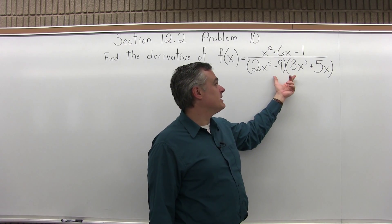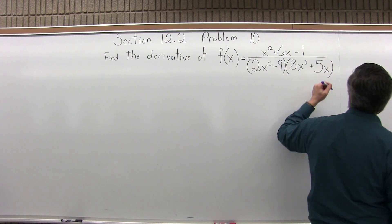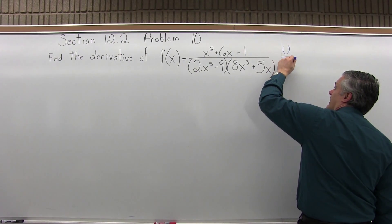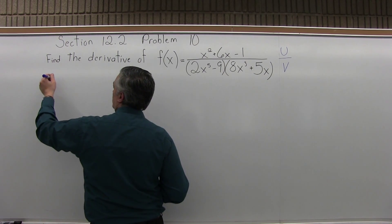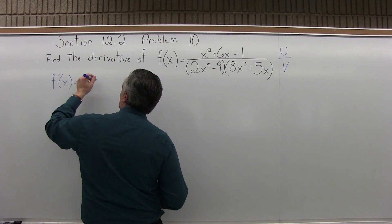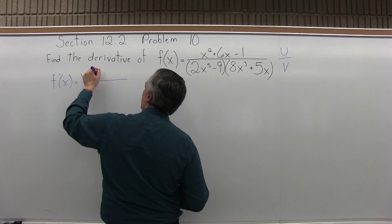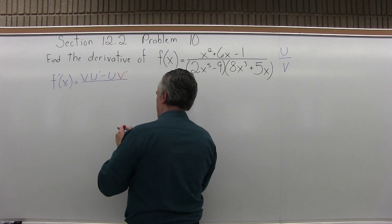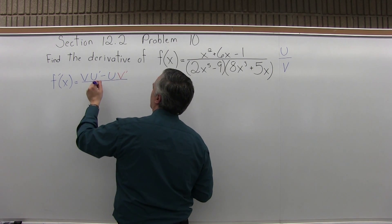Find the derivative of f of x equals x squared plus 6x minus 1, over 2x to the fifth power minus 9, times 8x to the third power plus 5x. This function is a combination of a product rule and a quotient rule. Overall, it is a quotient problem — it has a numerator and a denominator — but the denominator is made up of a product. You could foil out the denominator and then it's just a regular quotient rule, but it's good practice to tie both rules together.